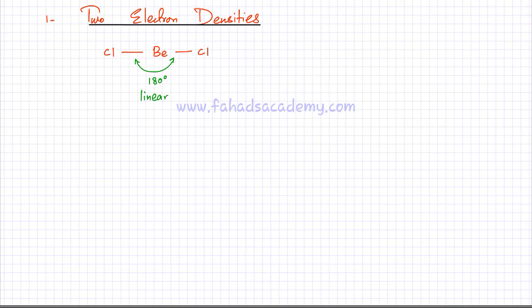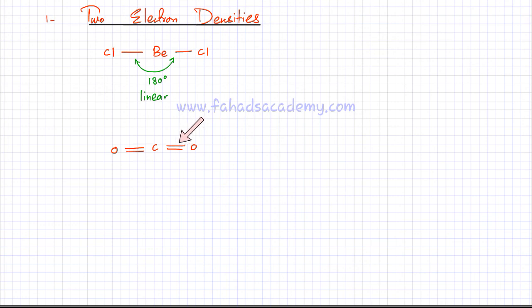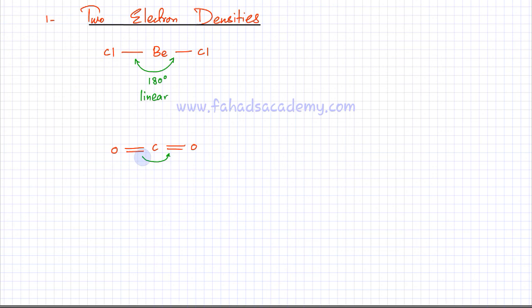Similarly, CO₂ has carbon making a double bond with an oxygen on one side and a double bond with another oxygen on the other side. A double bond counts as one electron density because the electrons are grouped together. These two electron densities repel each other and are as far apart as possible, giving bond angles of 180° and a linear shape.